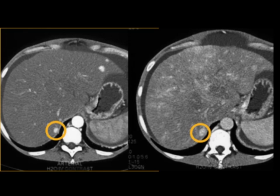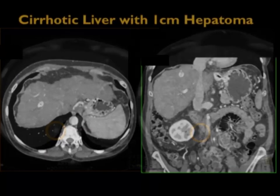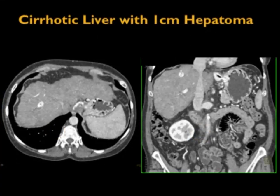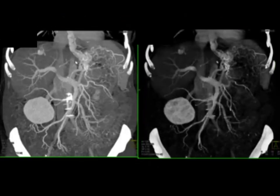Regenerating nodules are a challenge. Sometimes MR can be helpful. This patient has cirrhosis and there's a one centimeter lesion in the dome of the right lobe of the liver, but that's a hepatoma. With regenerating nodules, we don't see any neovascularity. In this case, you can see the neovascularity feeding this lesion that's seen in the dome of the liver.